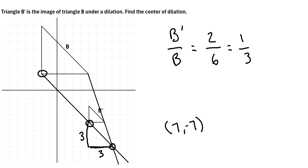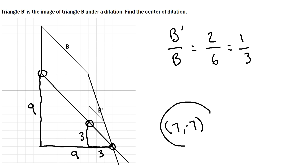Going nine to the left and then three times the upward distance — three times three is nine — so up nine as well. That's a distance of nine each direction, and we do indeed land at this bottom left corner of B. It was three times the distance to get to that corner as it was to the corresponding corner in B'. So that verifies that (7, -7) is the correct center of dilation.